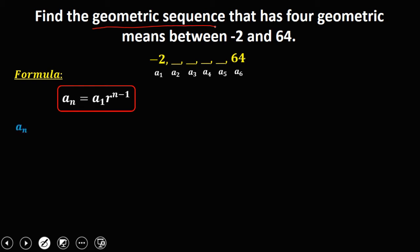Now, a sub n is the last term, and since our last term is 64, a sub n is 64. Then a sub 1 is the first term, and the first term is negative 2, so a sub 1 is negative 2. Then n is the position of the last term — since a sub n is 64 and 64 is a sub 6, n is equal to 6.